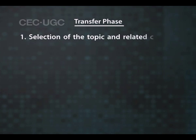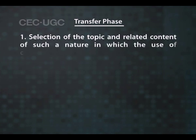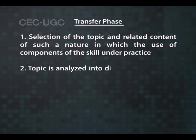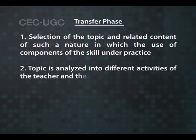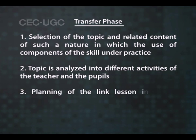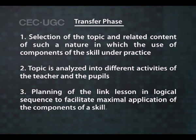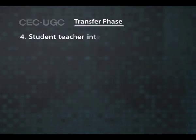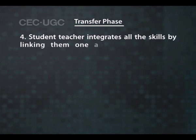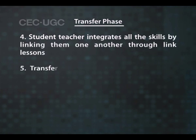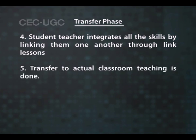The transfer phase of micro-teaching comes after attaining mastery and command over the teaching skills. In this phase: selection of the topic and related content in which the components of the skill under practice are used; the topic is analyzed into different activities of the teacher and pupils; planning of the link lesson in logical sequence to facilitate maximal application of the components of a skill; student teachers integrate all the skills by linking them through link lessons; and transfer to actual classroom teaching is done.